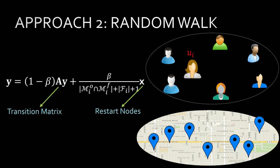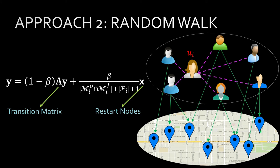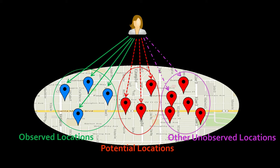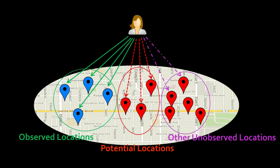The second approach is random walk. We consider three types of links: user to user, user to location, and location to location. For each user, we have three types of locations: observed locations, potential locations, and other unobserved locations.